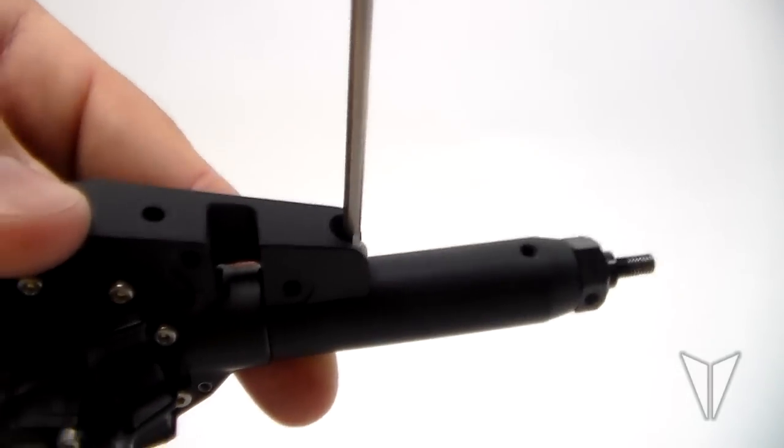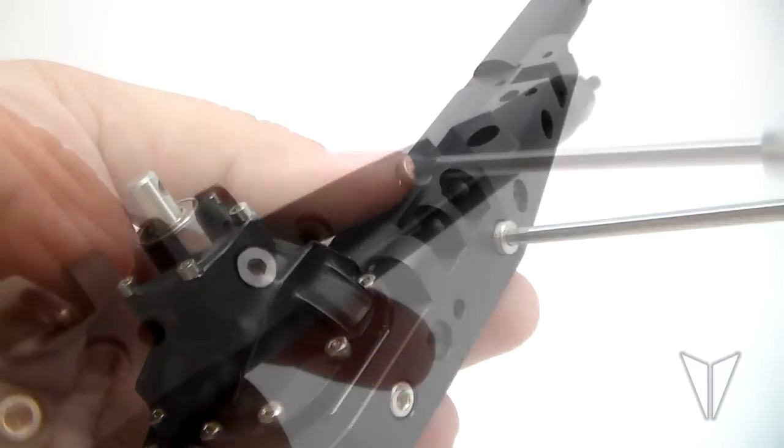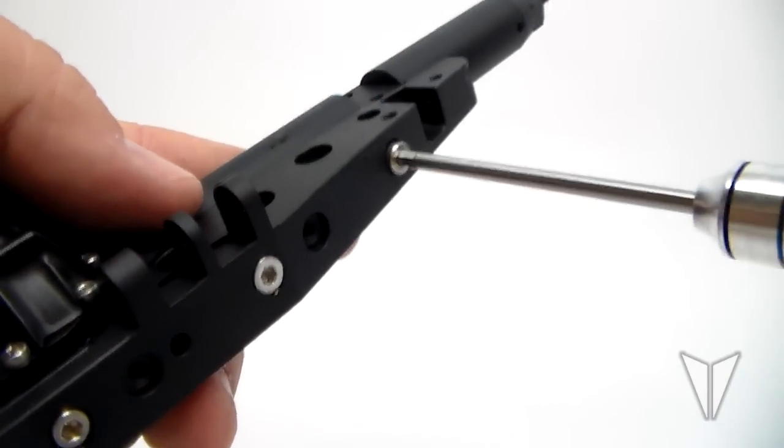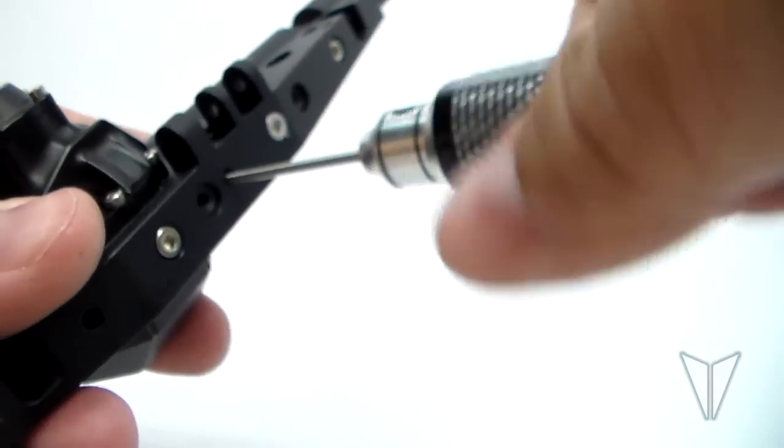Followed by the M3 by six millimeter on the short tube and the M3 by 14 and M3 by 20 on the long tube. Once those are installed you can retighten the set screws on the tubes.